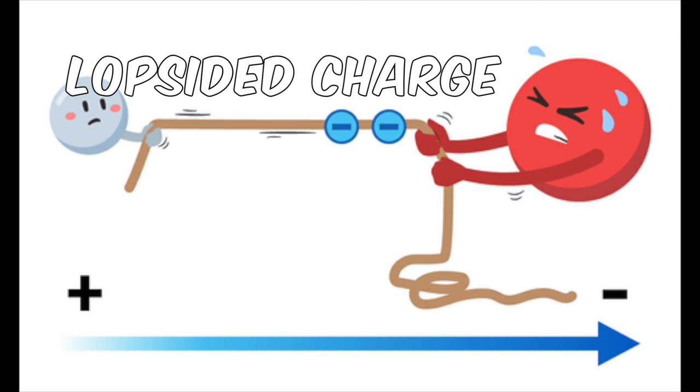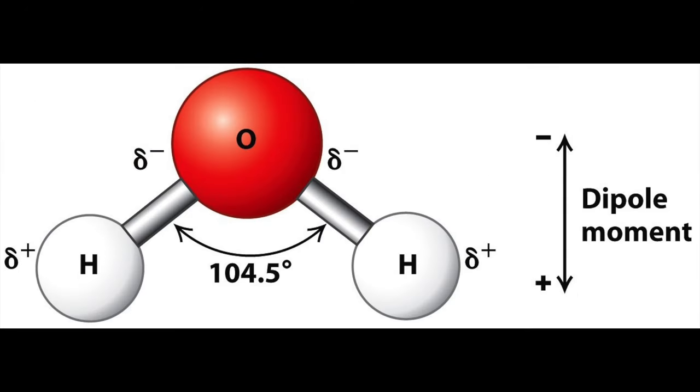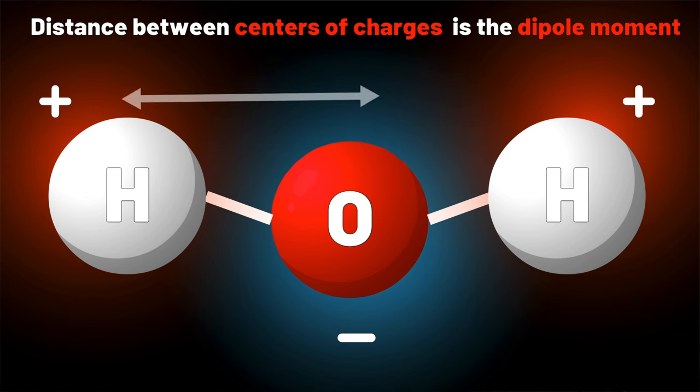This is known as a lopsided charge, caused due to the asymmetrical shape of water molecules. The distance between these opposite charges is the dipole moment, which changes when the molecule undergoes the following movements.